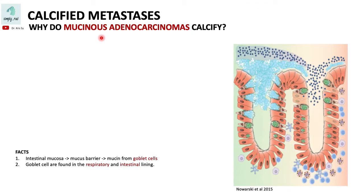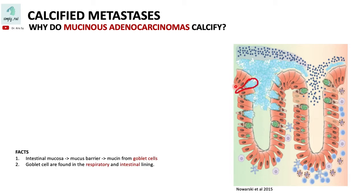This is a drawing of the intestinal lining. Look at the blue structures here — this blue structure is the mucus which forms the protective barrier. This protective barrier would impede the access of bacteria from the lumen reaching the epithelial cells. This mucus comes from mucin, and this mucin comes from the goblet cells.